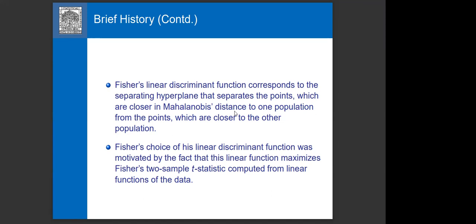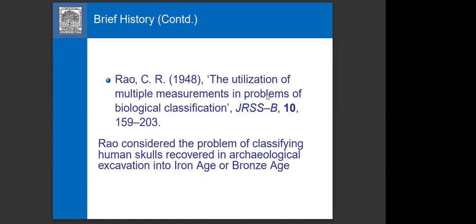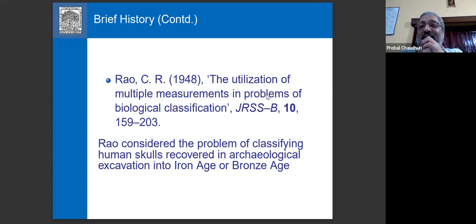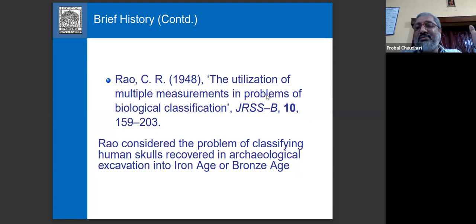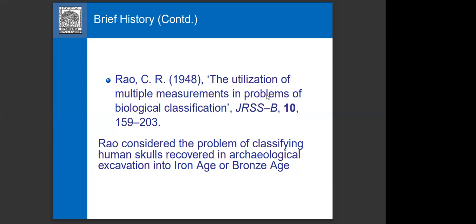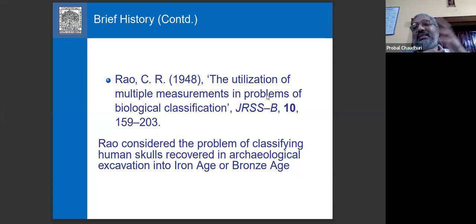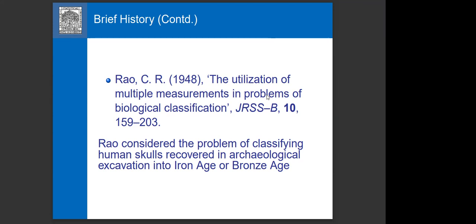Before C.R. Rao's 1948 paper, it was quite often the case that observations were modeled as coming from unimodal distributions, since people were making plots and could see the shapes. But the question of whether the linear discriminant function has any optimality property under appropriate conditions was not properly formulated until C.R. Rao's work. In the 1930s and 1940s, if any distribution was in mind, it was always the normal distribution — nothing else. Elliptical symmetry was not in anyone's thinking at that time.